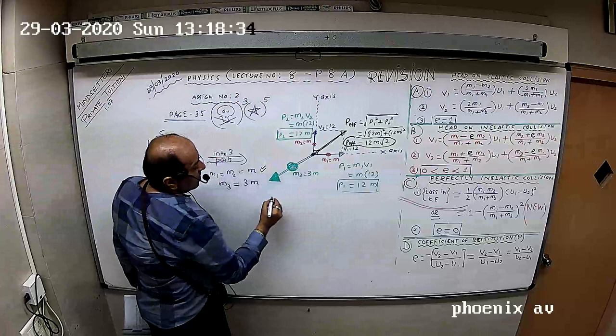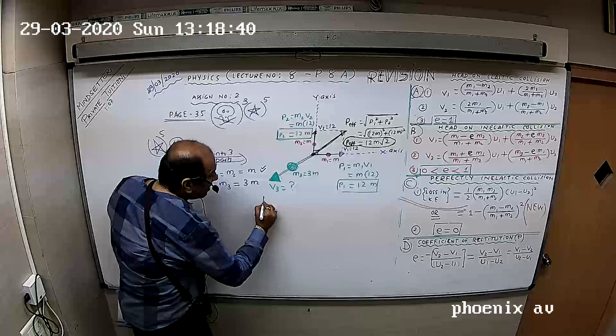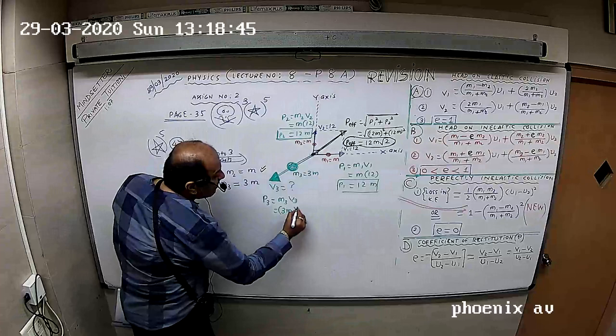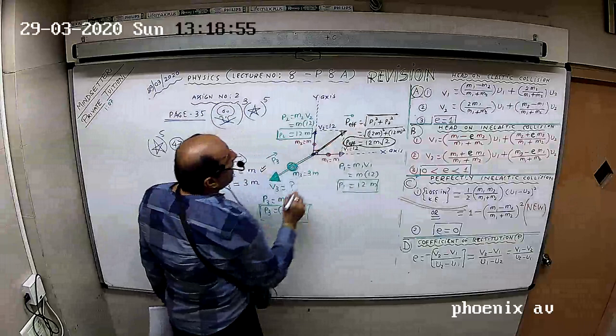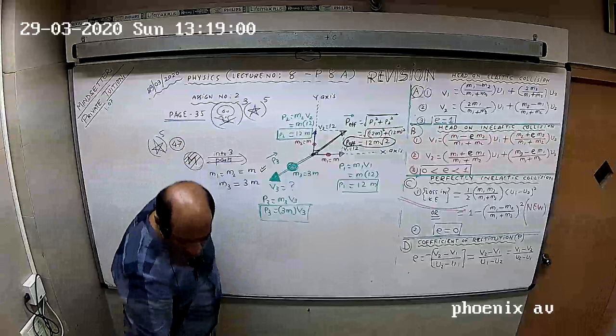This momentum vector, P3, will balance the P effective. P effective is this, P3 is this.